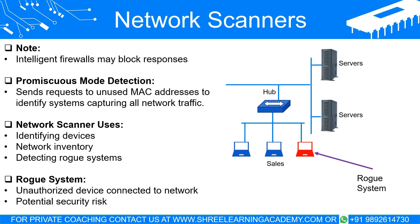This is where network scanners come into play. These tools can scan the entire network, capturing details about each connected device such as its IP and MAC addresses, device type, and open network ports. The network scanner then compares these details against a pre-approved index of authorized systems. If a device doesn't match with the pre-approved index, it's flagged as a rogue system.